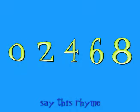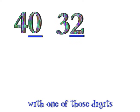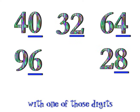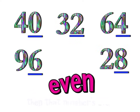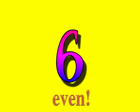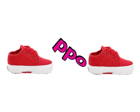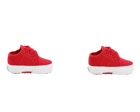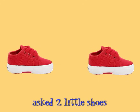Say this rhyme: if any number ends with one of those digits, then that number's even every time. 2 — Even. 8 — Even. 6 — Even. 7... 9... 4 — Even. 3... 0 — Even.